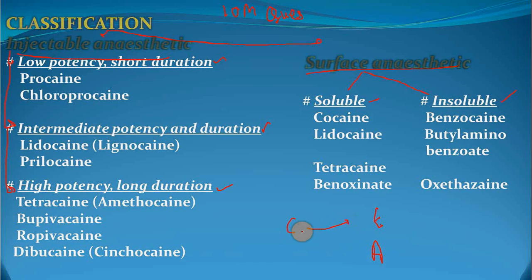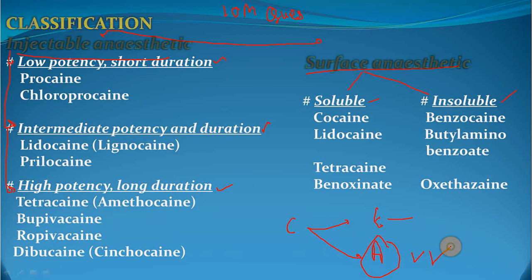Features of amide-linked local anesthetics compared to ester-linked: they produce more intense and long-lasting anesthesia, bind to alpha-1 acid glycoprotein in the plasma, are not hydrolyzed by plasma esterases (whereas ester-linked are hydrolyzed), rarely produce hypersensitivity reactions, and show no cross-sensitivity with ester-linked local anesthetics. Therefore, amide-linked local anesthetics are preferred.